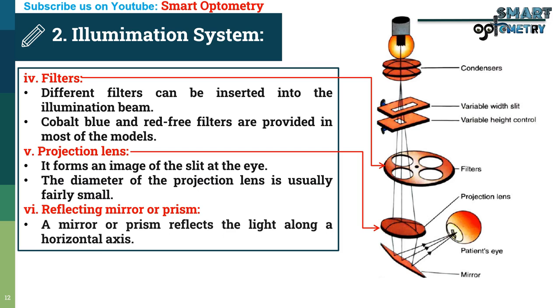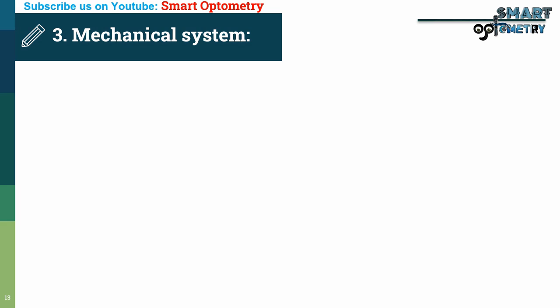Reflecting Mirror or Prism: A mirror or prism reflects the light along a horizontal axis. In this figure you can see the reflecting mirror.